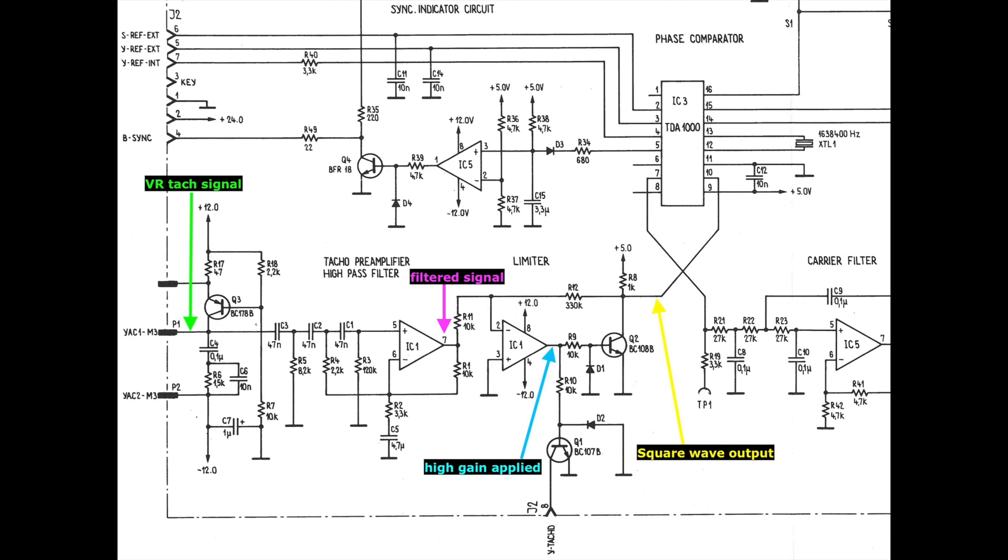From my research, this filter type is closest to a Sallen-Key design, but there are modifications made for which it's difficult for me to predict the results. The filtered sine wave is passed to the second op-amp in IC1,